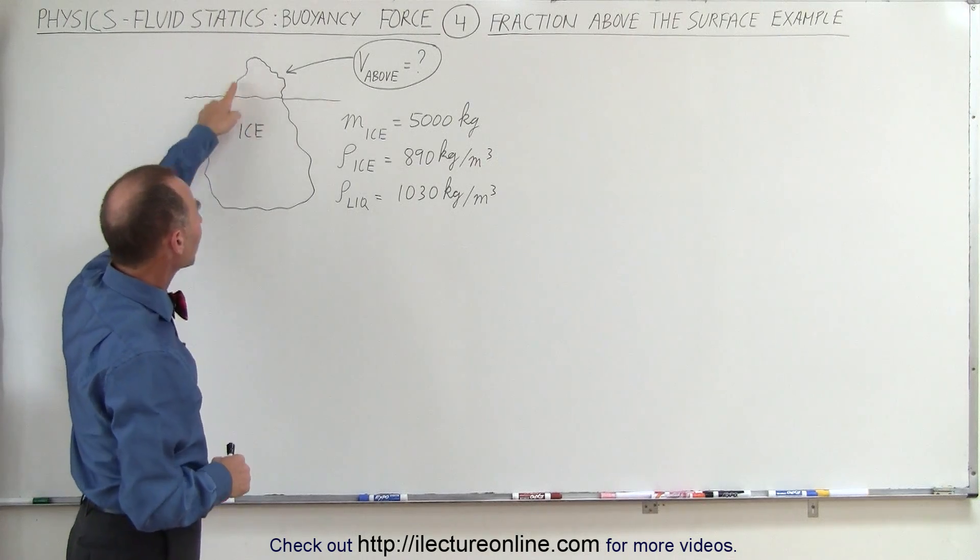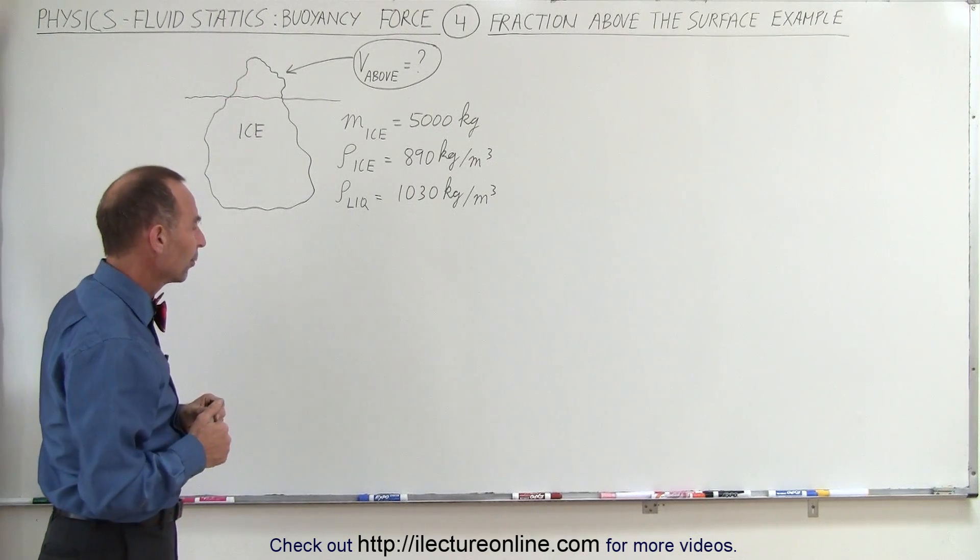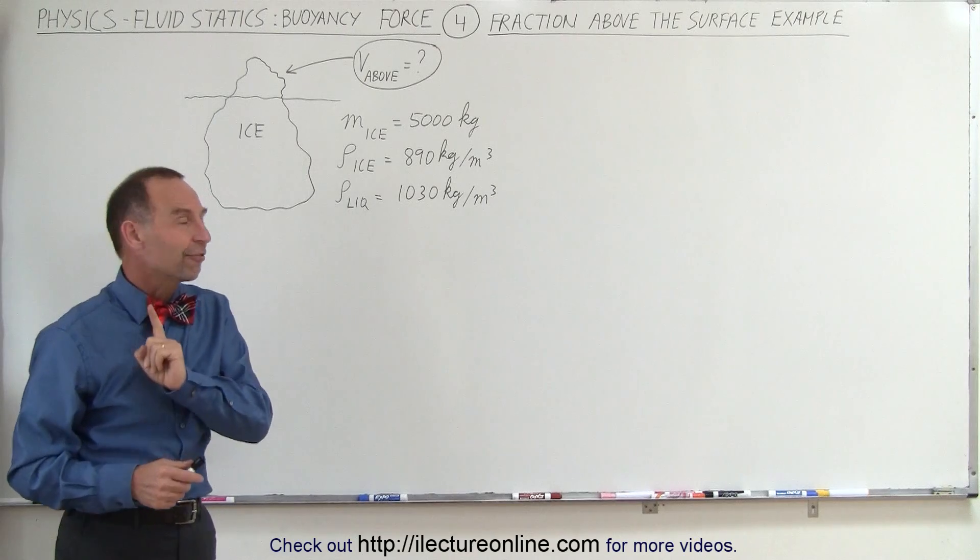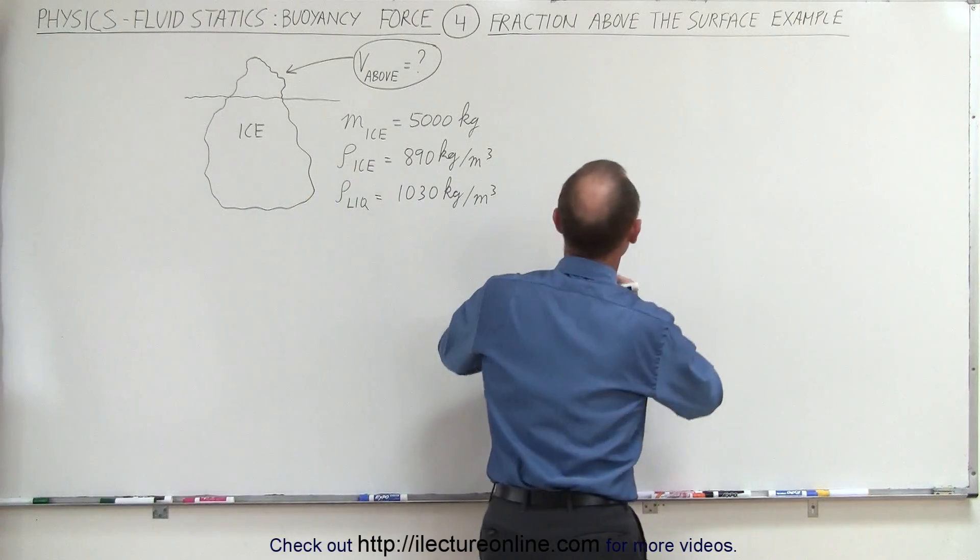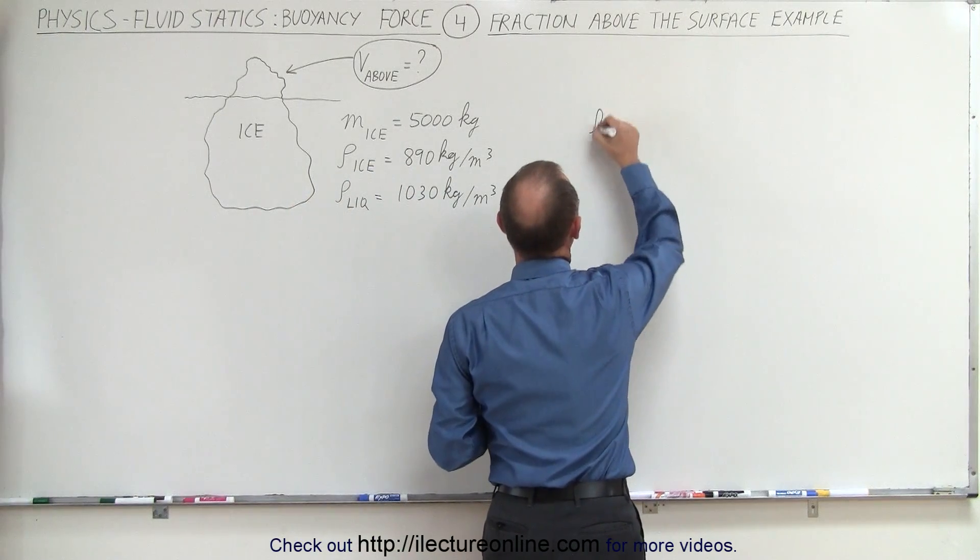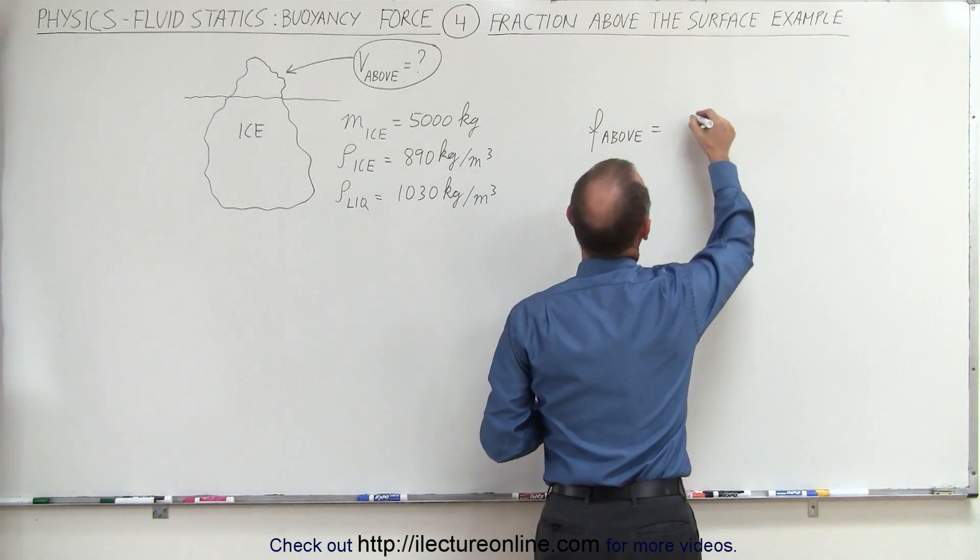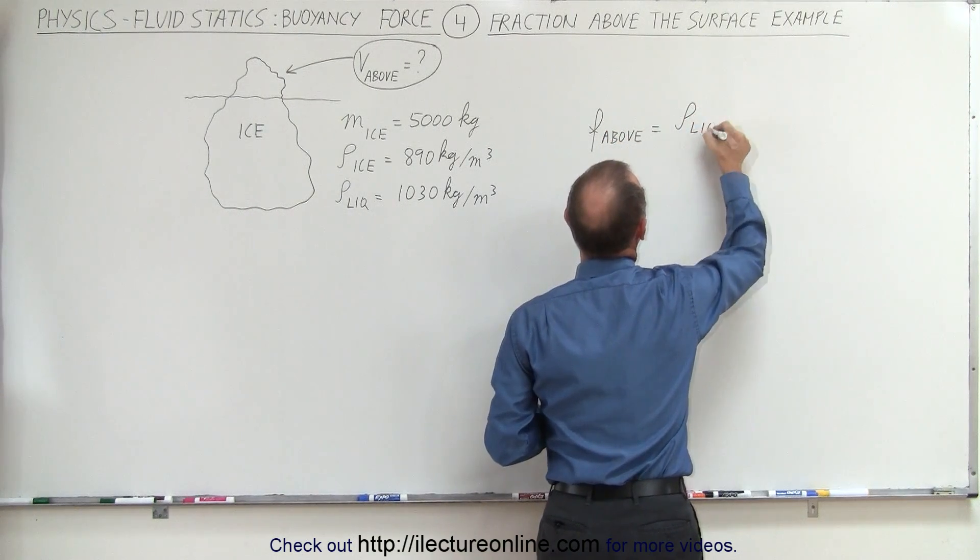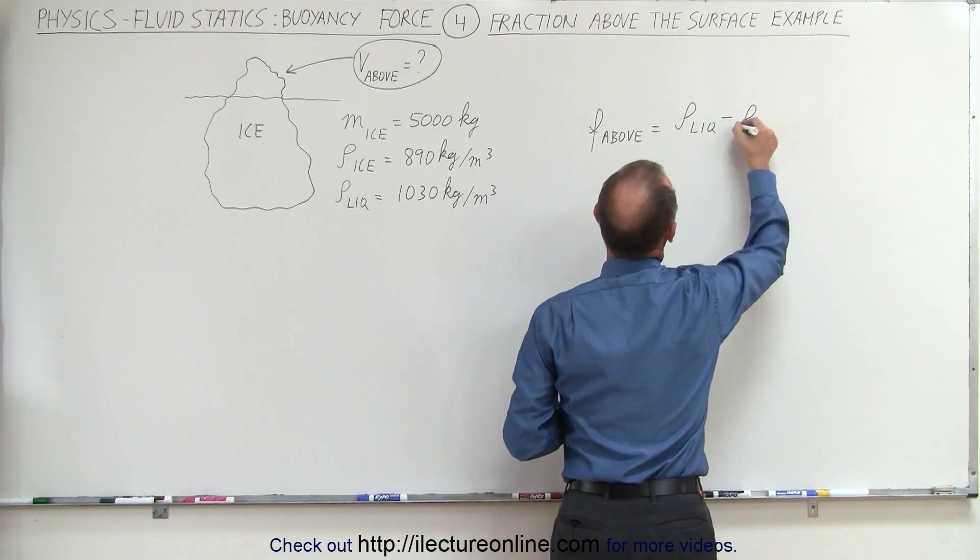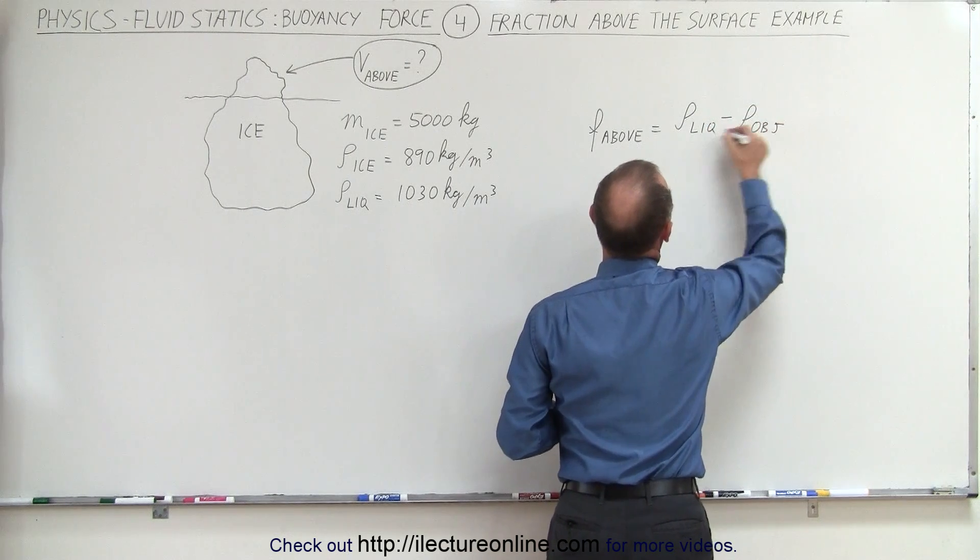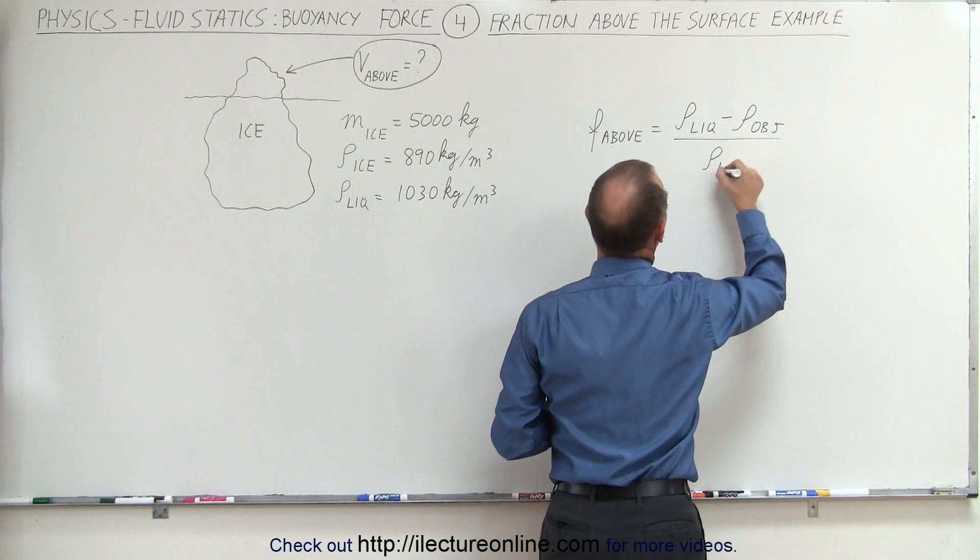We want to know the amount of ice above the surface. We'll start by figuring out the fraction. The equation from a previous video is: the fraction above the surface equals the density of the liquid minus the density of the object, divided by the density of the liquid.